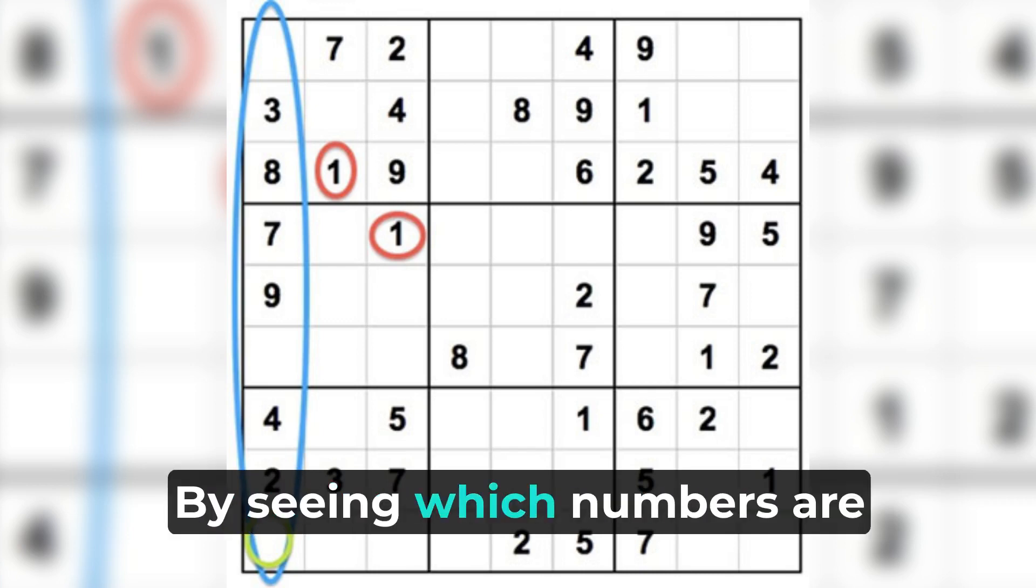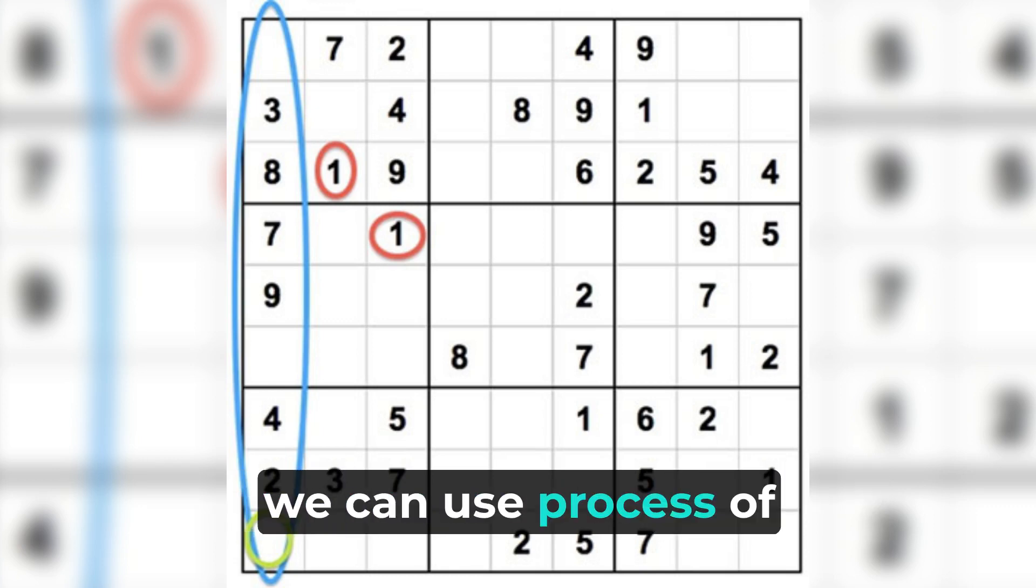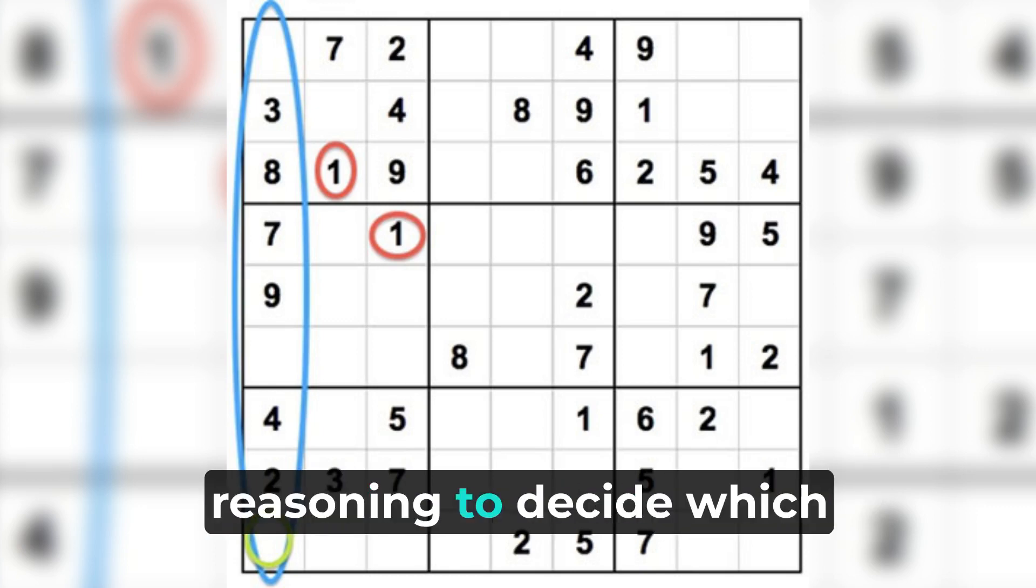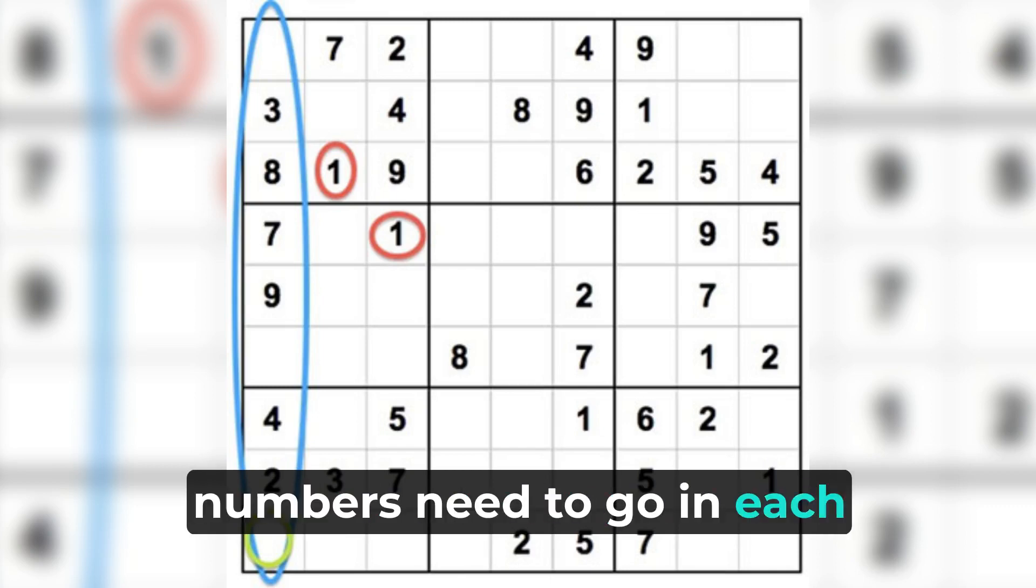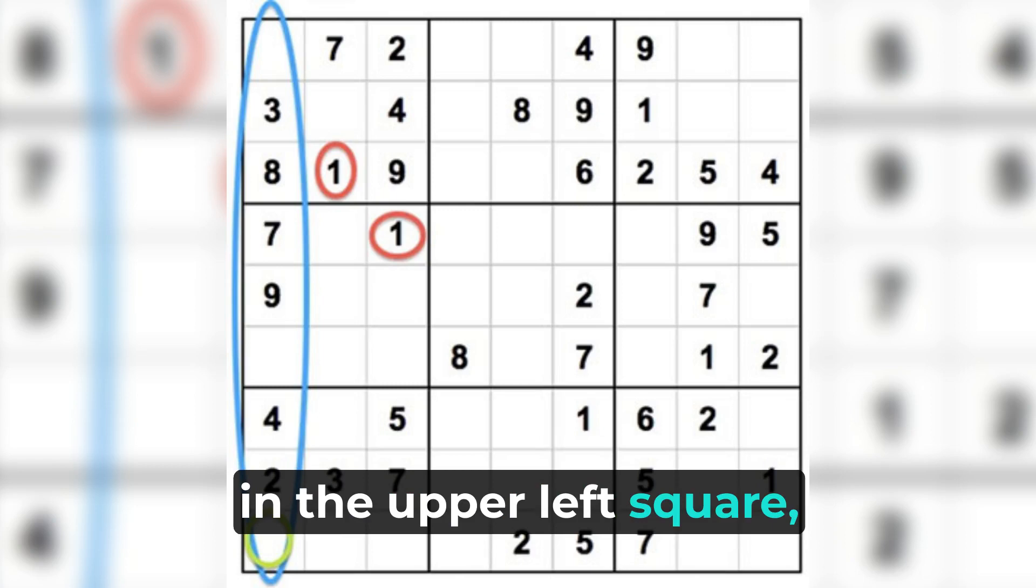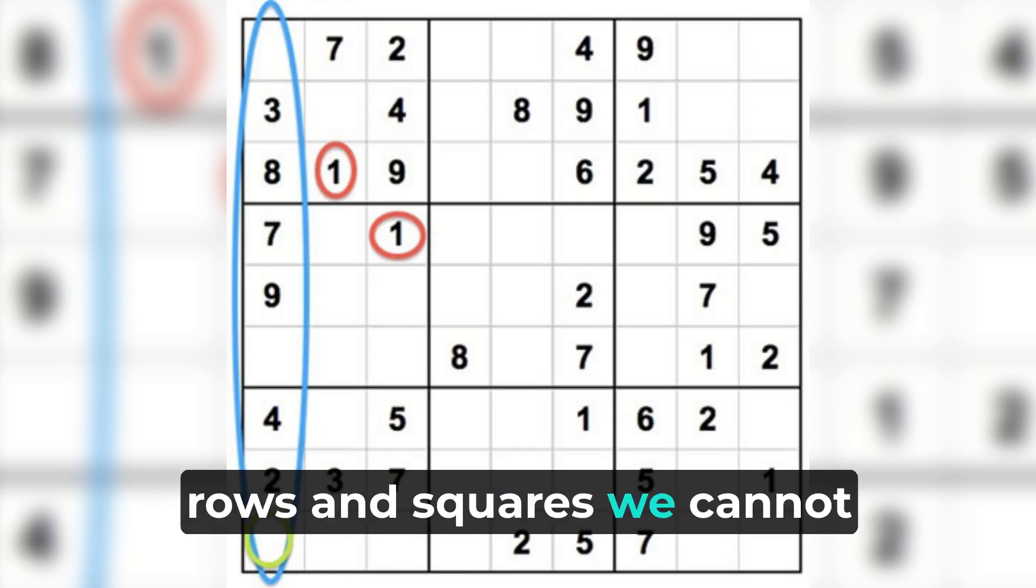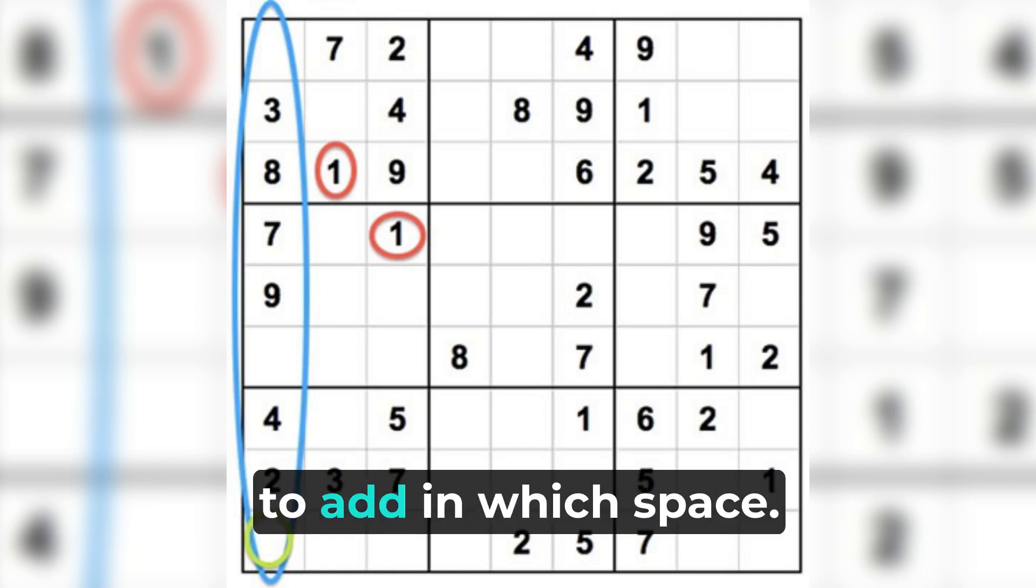By seeing which numbers are missing from each square, row, or column, we can use process of elimination and deductive reasoning to decide which numbers need to go in each blank space. For example, in the upper left square, we know we need to add a five and a six to complete the square, but based on the neighboring rows and squares, we cannot clearly deduce which number to add in which space.